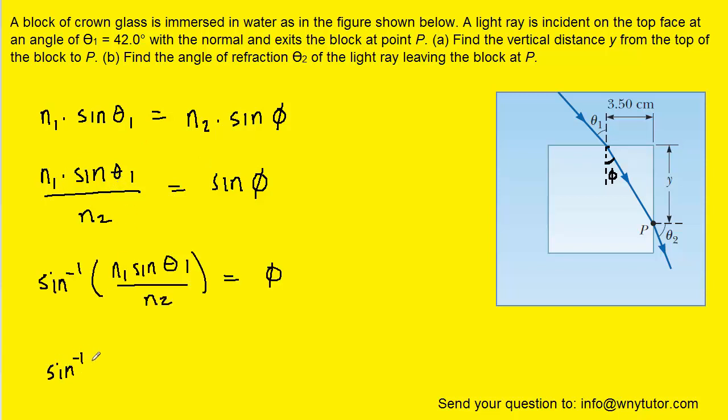And then we'll go ahead and plug in the known values. We look up the index of refraction for water, and it turns out to be roughly 1.333. Theta 1 was given to us as being 42 degrees.